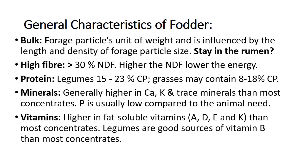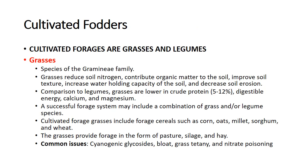In green roughages and particularly in cereal grains, phosphorus is bound with phytic acid, making it less available to monogastric species. Green forages are high in fat-soluble vitamins A, D, E, and K compared to most concentrates, and legumes are a good source of B vitamins. Cultivated forages are normally grasses and legumes. Grasses belong to the Gramineae family; they reduce soil nitrogen but contribute organic matter to the soil, improve soil texture, increase water-holding capacity, and decrease soil erosion. Compared to legumes, grasses are lower in crude protein — only 5 to 12 percent — with less digestible energy and lower calcium and magnesium content.